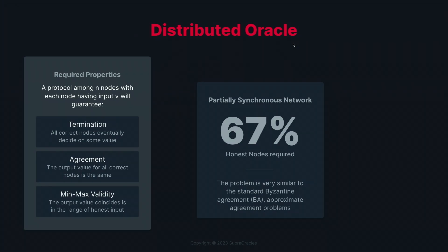Finally, we want what is known as min-max validity — the final output should be something in the range of honest inputs. It should not be the case that an adversarial node proposes some outrageous value and we agree on that. Given this, what is required in a traditional environment, as done by current oracle nodes, is 67% honest majority — the super honest majority. This is a well-established bound coming from the similarity of this problem to the Byzantine agreement problem, or approximate agreement problem, and because of that we require nearly two-thirds majority.